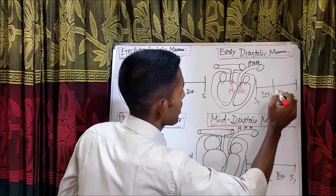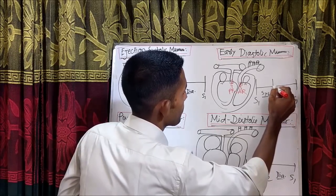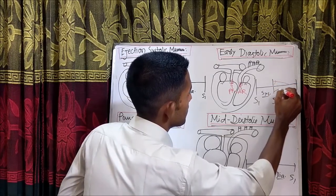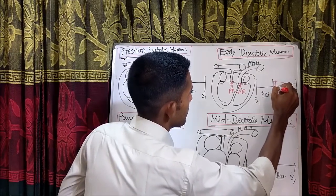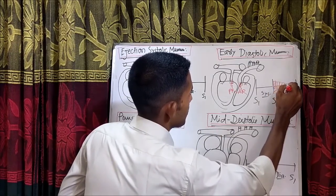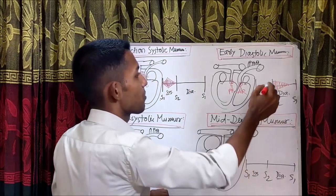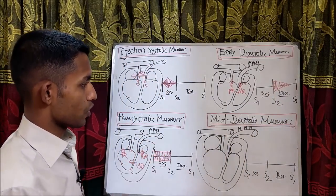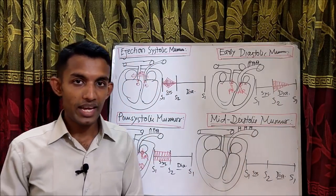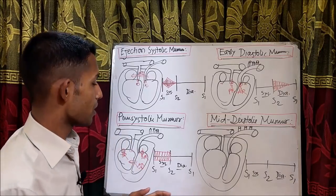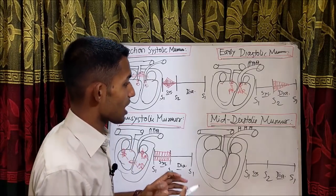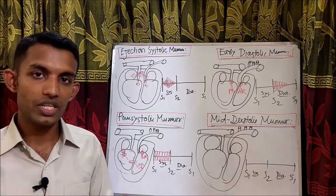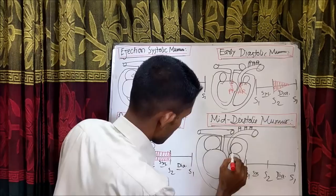The intensity of the murmur is more in early diastole. Now, mid-diastolic murmur is turbulence in mid-diastole through stenosed valves.